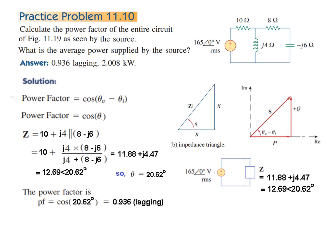The power factor value is 0.936. This is an overall inductive circuit. For an inductor, current lags voltage, so the power factor is also lagging.